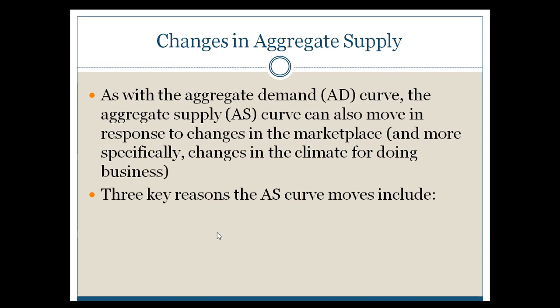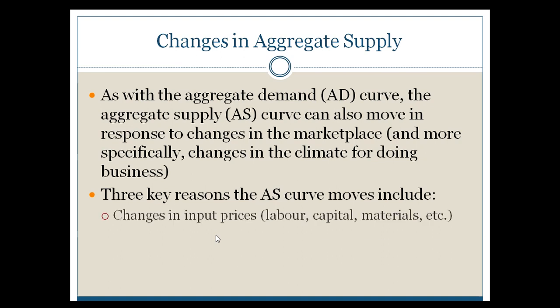The first involves changes in input prices — things you use to make products, whether it's labor, capital, or materials. If you change the price of making products, it has an impact in terms of how much you can make and price levels within your economy.